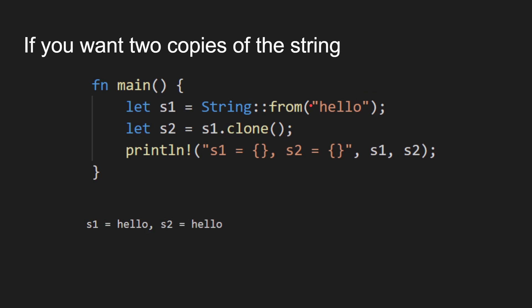So if you want two copies of the string, then you specifically have to use the clone function. You say let S2 equal to S1 dot clone, which means it will take the value hello and put it somewhere else in memory. Now there are two copies of it — one belonging to S1, one to S2. When you print it out, you get hello and hello. But these are two separate things in memory. If you want just a copy, use clone.